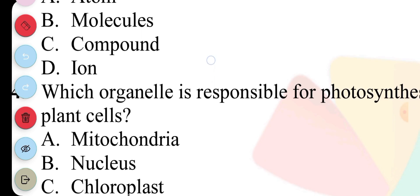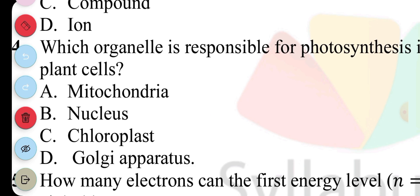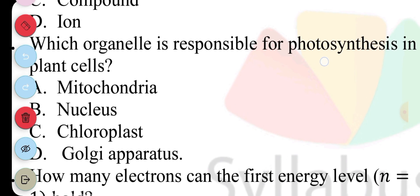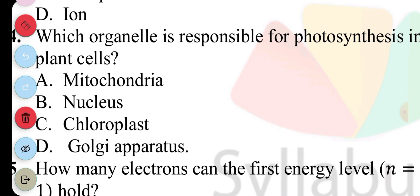Question 4. Which organelle is responsible for photosynthesis in plant cells? A. Mitochondria, B. Nucleus, C. Chloroplast, D. Golgi apparatus. The answer to question 4 is C. Chloroplast.